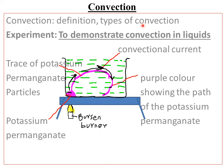Forced convection involves mixing of hot and cold parts of the fluid through some external stirring, like a fan or a pump. Stirring ensures uniform distribution of heat.